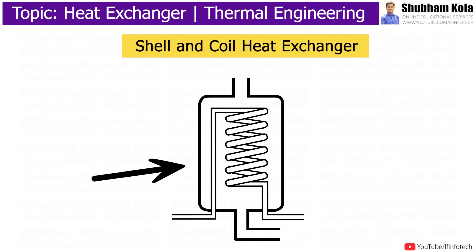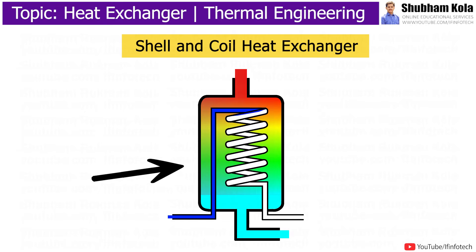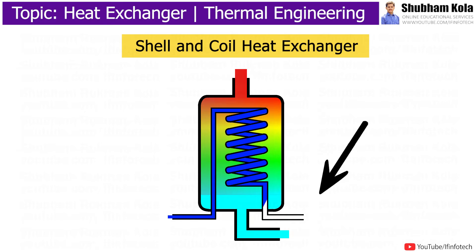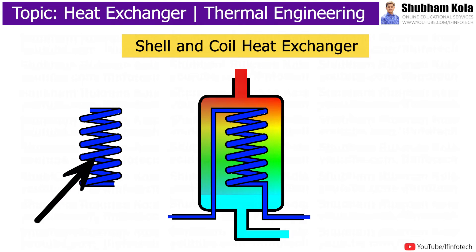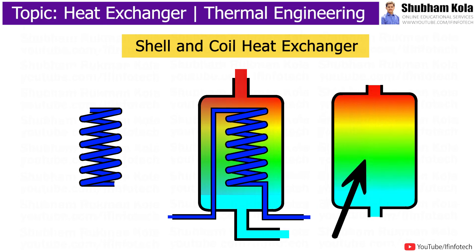In this type of heat exchanger, hot fluid enters into the shell at the top. The hot fluid then surrounds the water coil, and water in the coil absorbs heat. Heated water comes out at the end of the coil, and the cold fluid then drops to the bottom of the shell. Water in the coil becomes hot by heat transfer from the hot fluid present in the shell. In this way, heat is transferred through the coil.